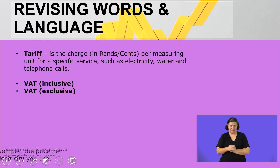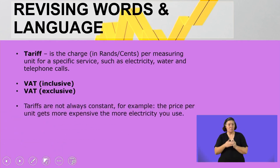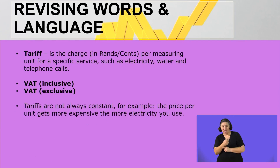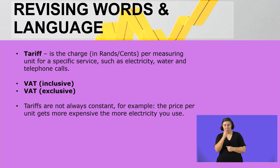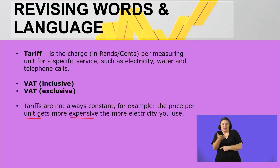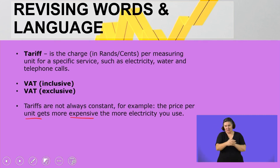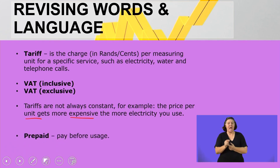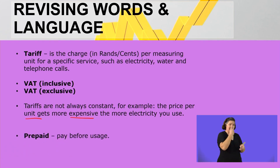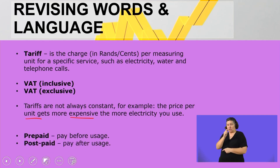We looked at VAT inclusive and VAT exclusive, where we said VAT in South Africa has been charged at 15%. Furthermore, we looked at tariffs by saying a tariff is not always constant — for example, the price per unit gets more expensive the more we use an item, for example electricity.